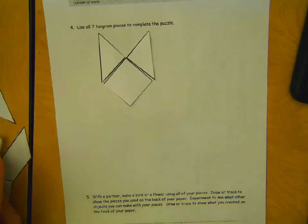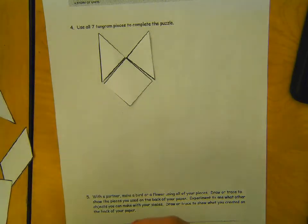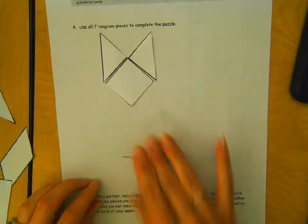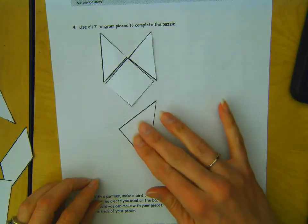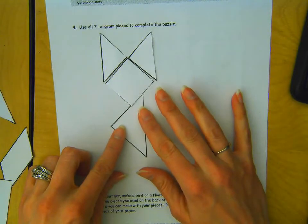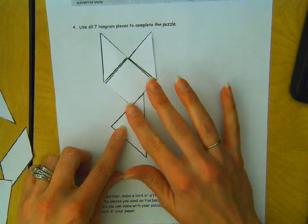And then, we have two big triangles and a medium-sized triangle left. So, I'm going to take the medium-sized triangle. And I'm going to put it this way. Kind of up by the square here.